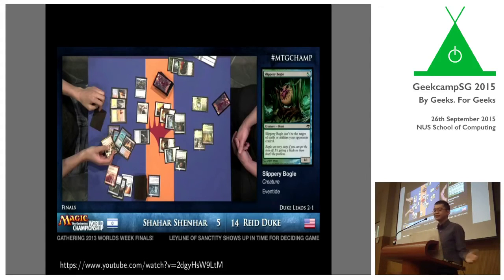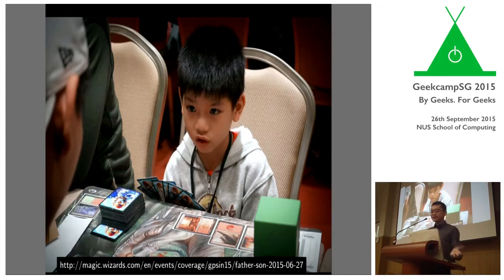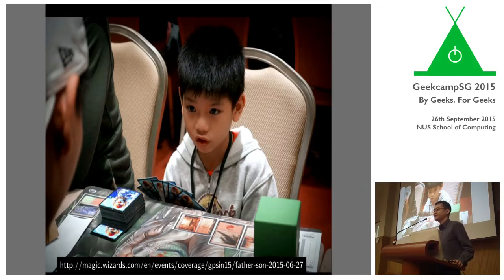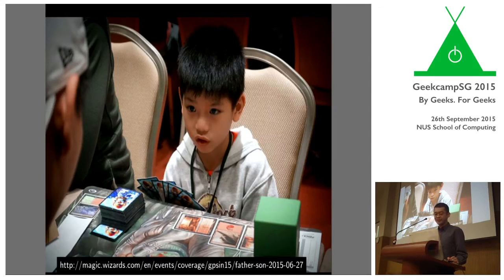Why is this game interesting from a technical perspective? Magic is kind of like poker because you also have a hand hidden from the opponent. You can see Sebastian Tan holding a number of cards — hidden from the opponent just like in poker. There's also a pile of cards called the library, hidden from both players, from which you draw more cards. So there are obviously sources of hidden information that make it as tricky as poker.